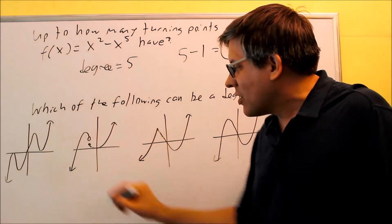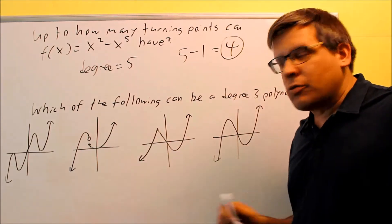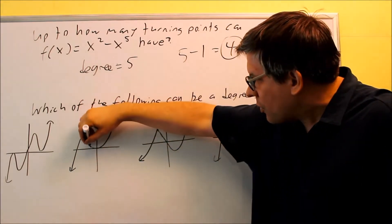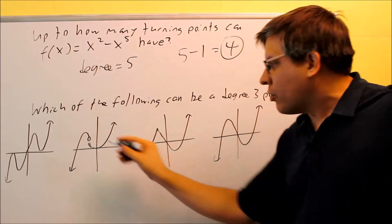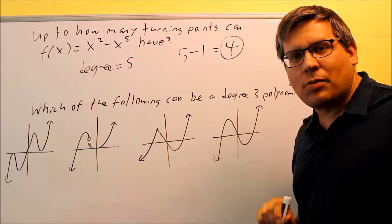The next one, this is not considered a polynomial either because there's a break in the graph. We've got an open circle, then we have a closed circle here. So it means it's discontinuous there. There's a break in the graph, so therefore that can't be a polynomial either.